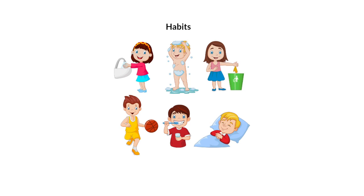Now, as we said, what is a habit? A habit is a pattern of behavior that is repeated throughout the day. For example, here the girl is washing her hands. When do we wash our hands? Before we eat and after we eat, and after playing with our friends outside. So this is a behavior that we do at a certain time.